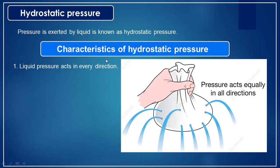There are some characteristics of hydrostatic pressure. The first characteristic is that liquid pressure acts in every direction. Unlike solid pressure, which acts directly downward, liquid pressure can act in all directions. This can be demonstrated using a polythene bag: fill it with liquid and make several holes. You will see water ejecting in different directions, showing that liquid pressure acts in every direction.